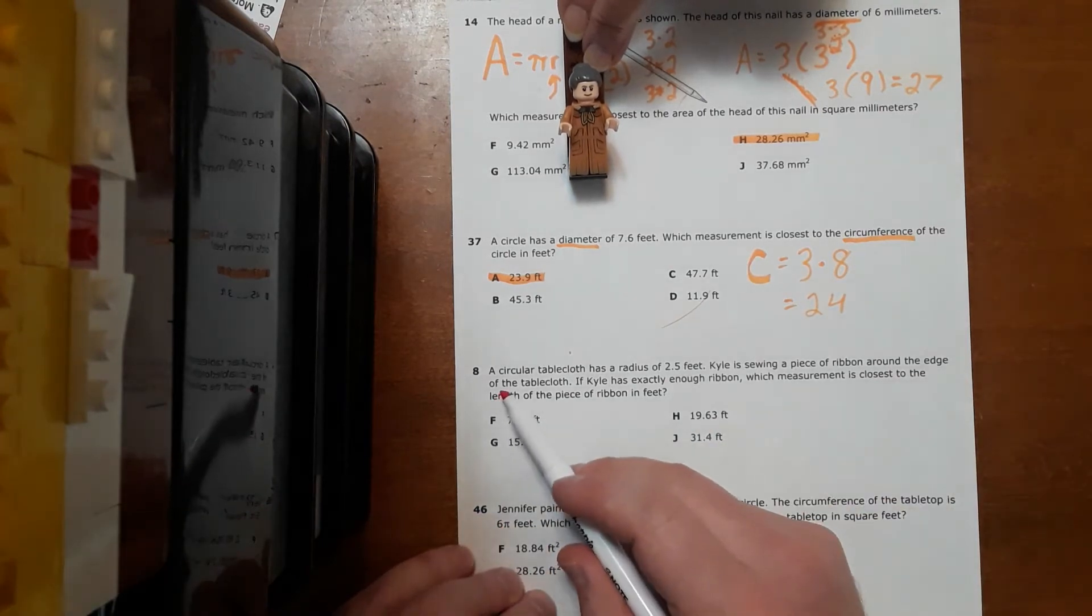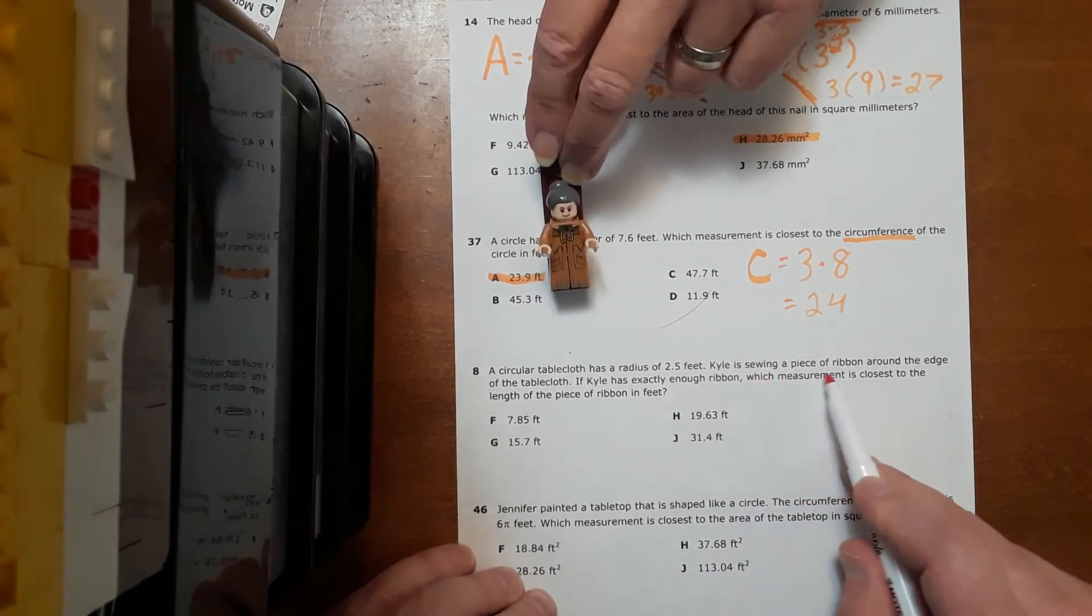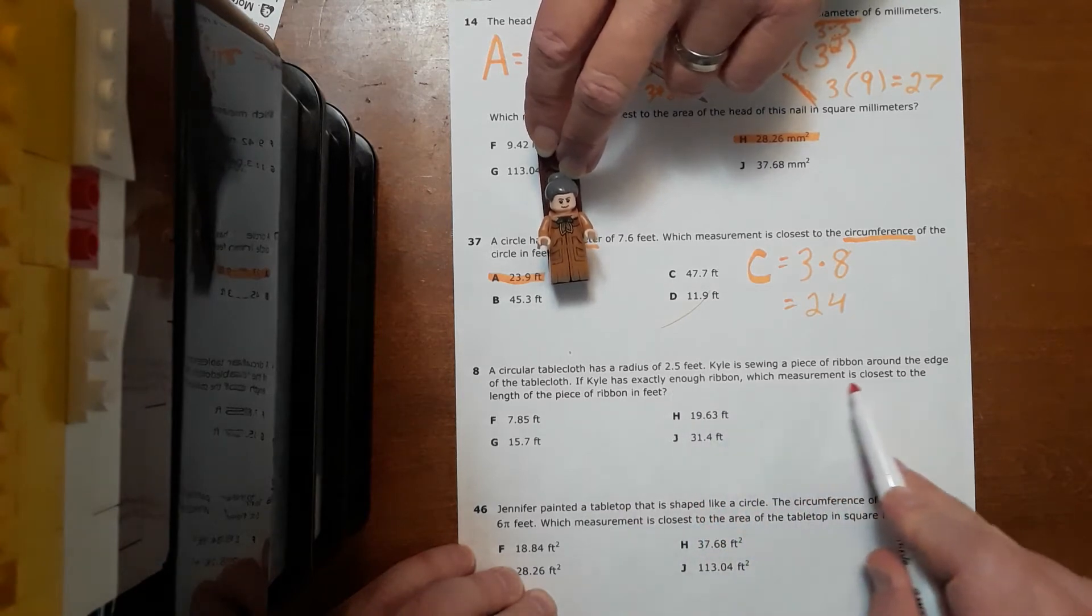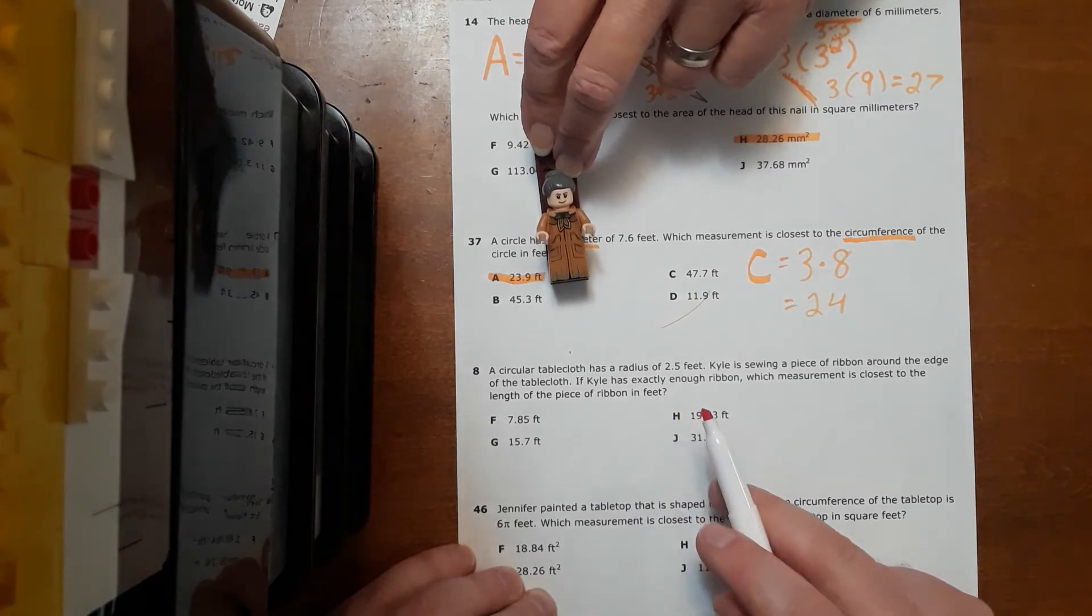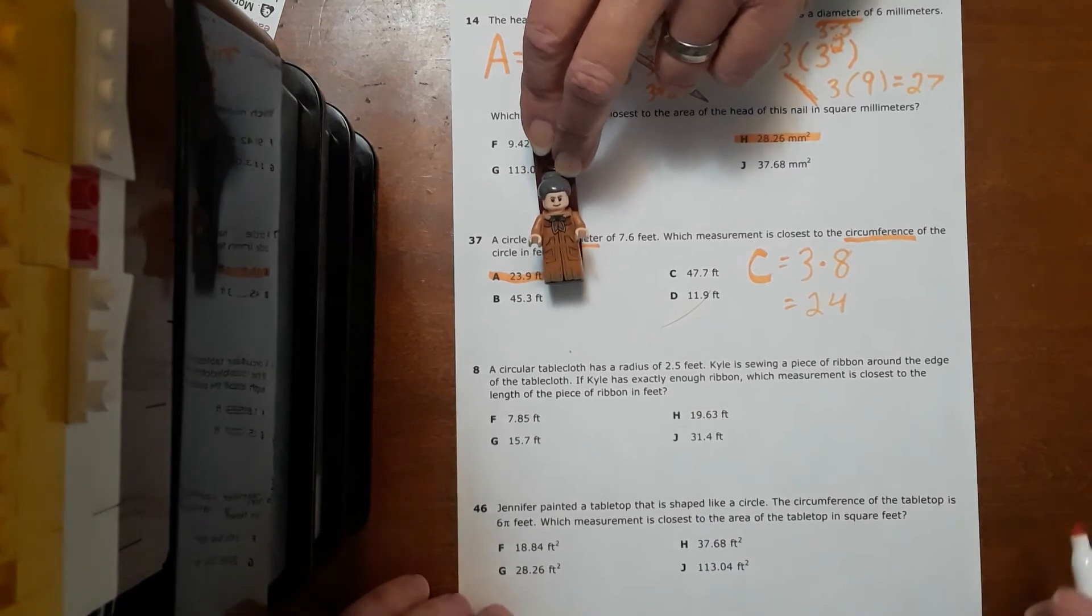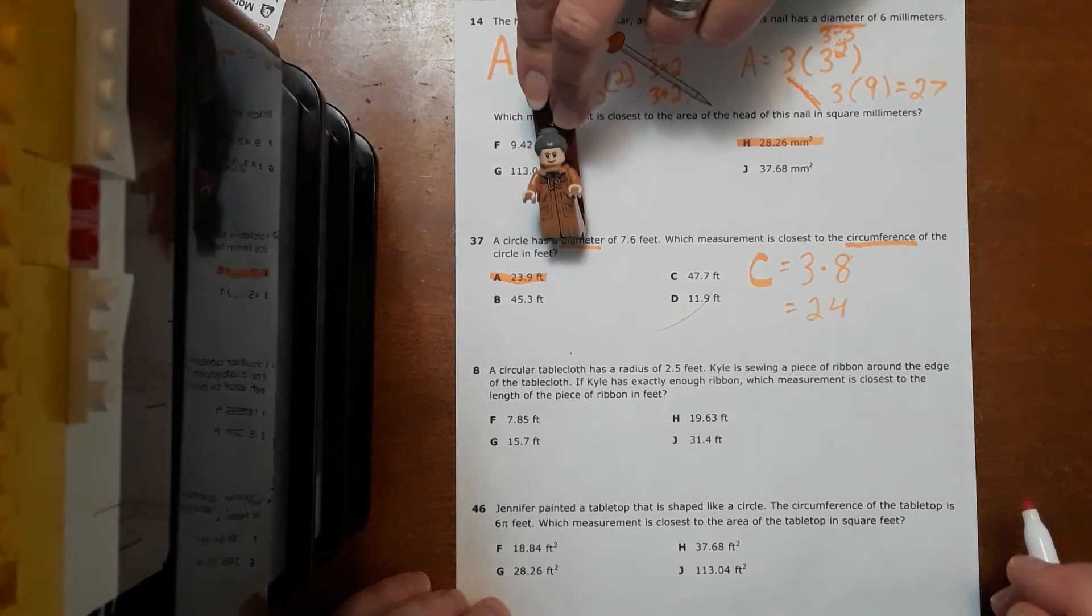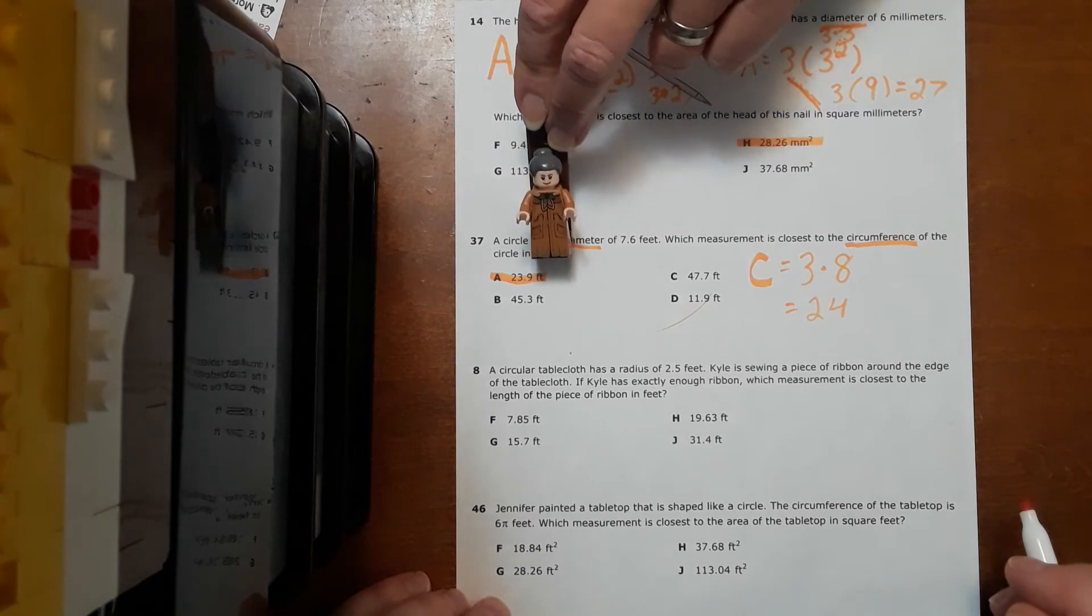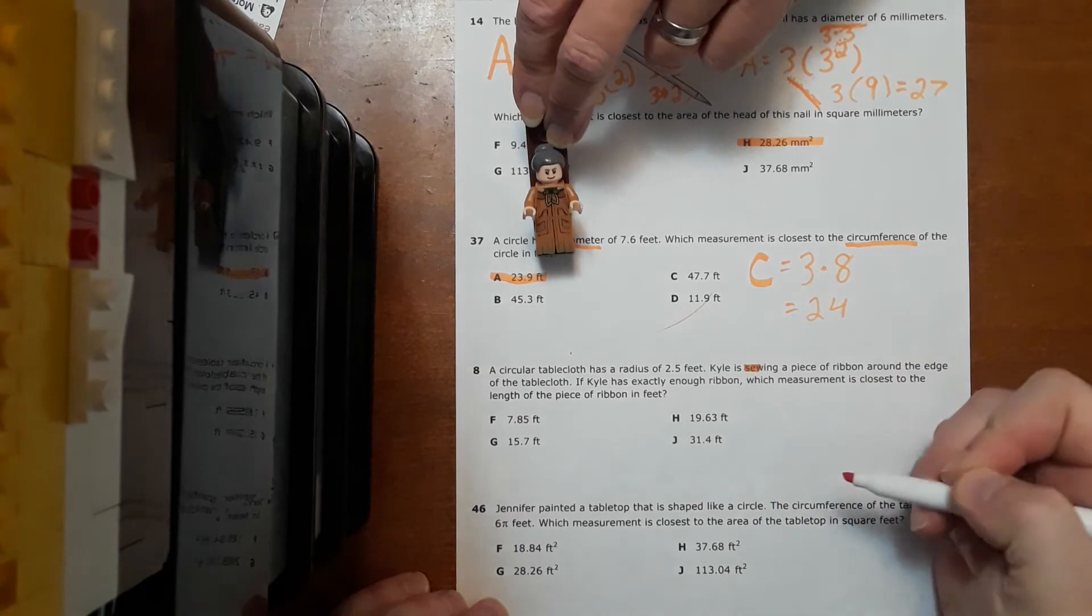Next problem here. A circular tablecloth has a radius of 2.5 feet. Kyle is sewing a piece of ribbon around the edge of the tablecloth. If Kyle has exactly enough ribbon, which measurement is closest to the length of the piece of ribbon in feet? So, I hesitate to even ask, but Mom, what are we trying to find in this problem? Well, he's trying to get the ribbon around the edge of the tablecloth. So, we need circumference. All right, I will give you points for the sewing pun, mother. That one was decent.